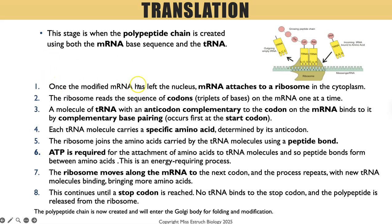Once the modified mRNA has left the nucleus it attaches to a ribosome. The ribosome reads the sequence of codons on the mRNA one codon at a time. There's always a mark for the concept that tRNA molecules have an anticodon — three bases that are complementary to three bases known as the codon on mRNA — so there's a mark for complementary base pairing between the anticodon and the codon on mRNA.